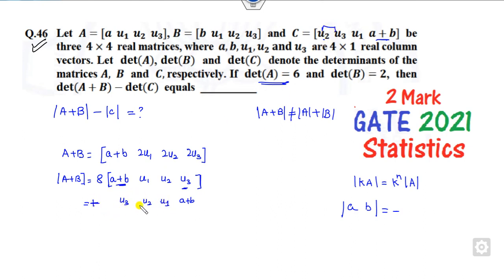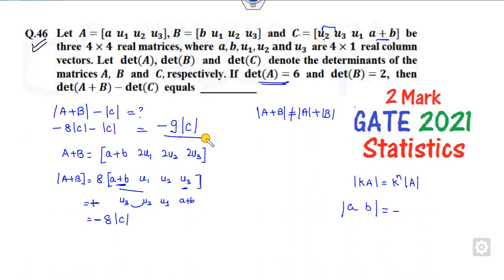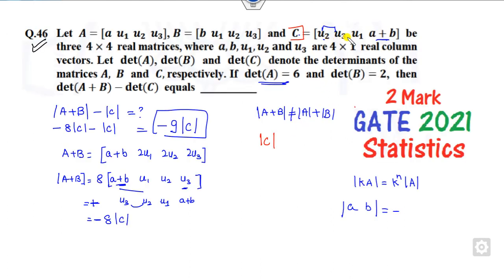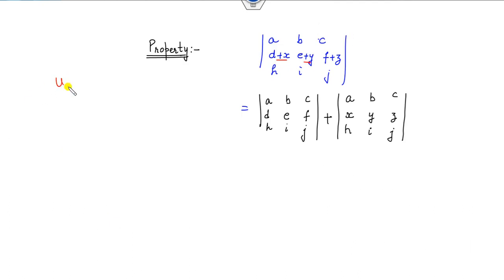After interchanging again to get u3 in position, we pick up another negative sign, giving a plus. Then changing once more gives a minus sign, and this result is nothing but minus det(C). So it will be minus C, and our target is basically to find the determinant of C using properties of determinants — writing the matrix as u2, u3, u1 of A plus B.